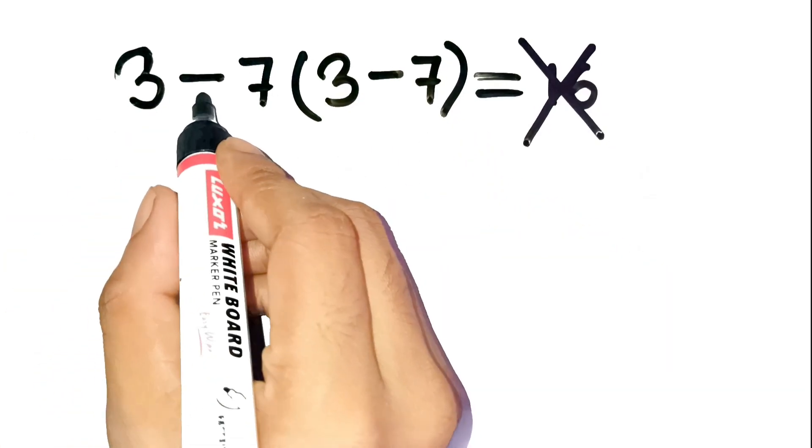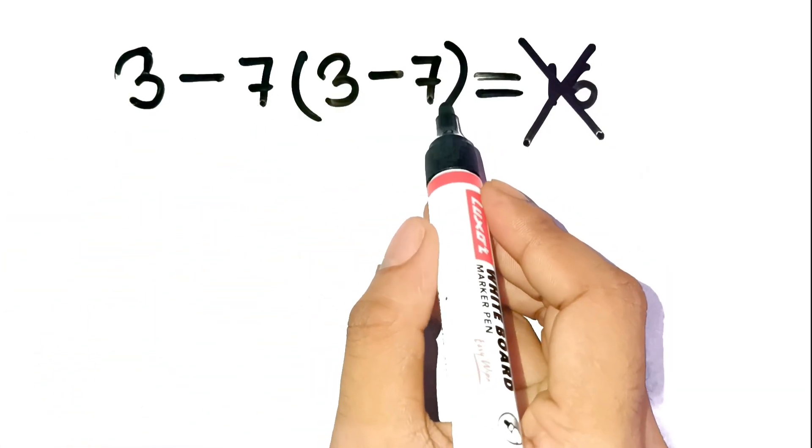The problem is 3 minus 7, open parenthesis, 3 minus 7, close parenthesis.